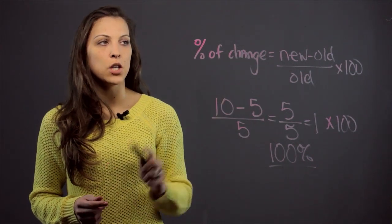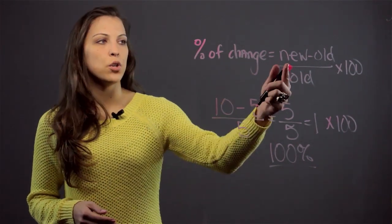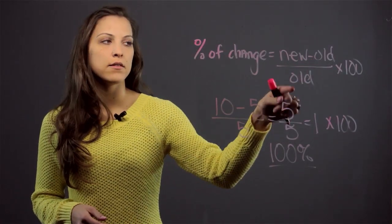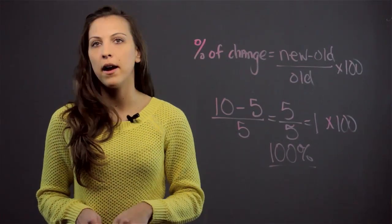So to find the percent of change, whether it's increase or decrease, you do the new value minus the old value, divide that by the old value, and then multiply it by 100 to make it a percent.